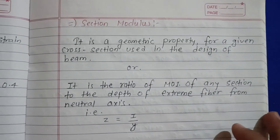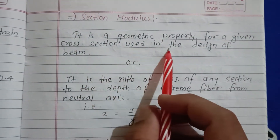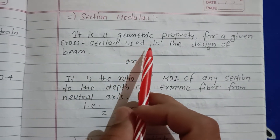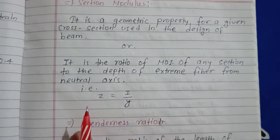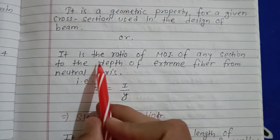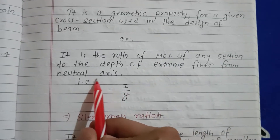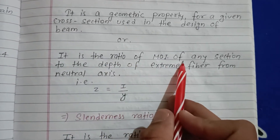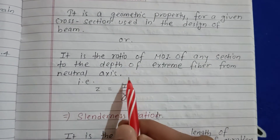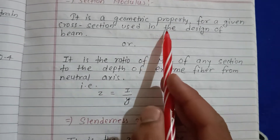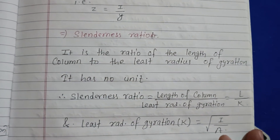Section modulus is a geometric property for a given cross-section used in the design of beams. It is the ratio of moment of inertia of any section to the depth of the extreme fiber from the neutral axis, i.e., moment of inertia upon depth (I/y).